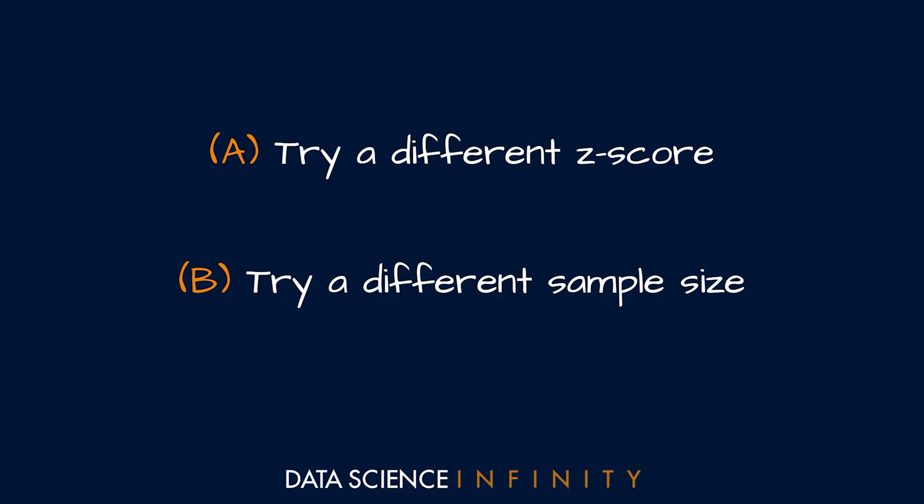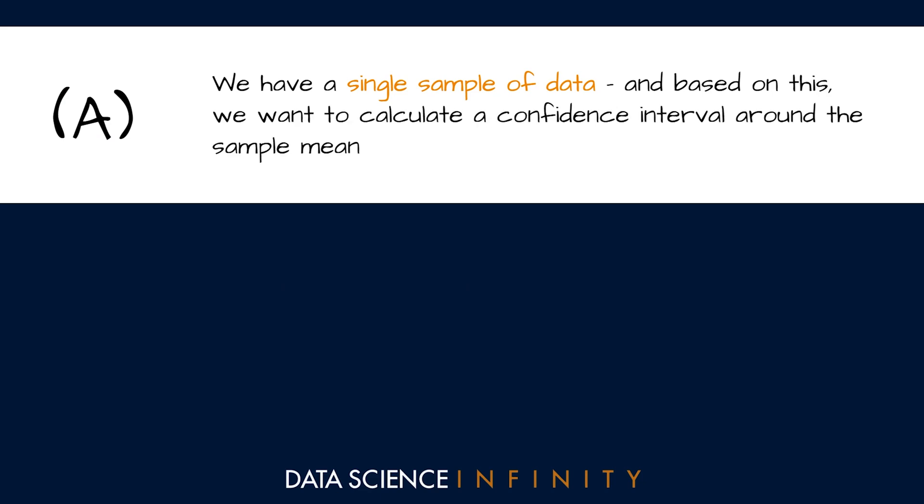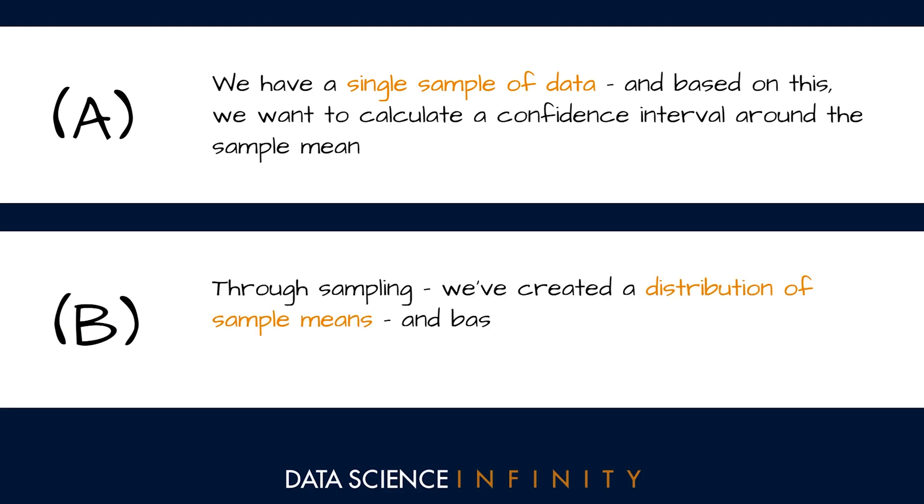Now one last thing before we end. When calculating confidence intervals there are essentially two scenarios we might be in. There is what we have done here, which is where we have a single sample of data and based on this we want to calculate a confidence interval around the sample mean. So again this is what we have just done. And then there is scenario b where through sampling we've created ourselves a distribution of sample means, so similar to what we saw in the last video on the central limit theorem, and with this we want to calculate a confidence interval around the mean sample mean.